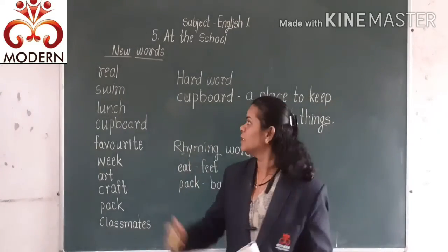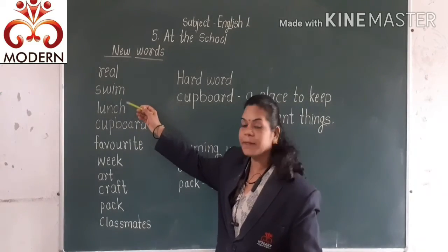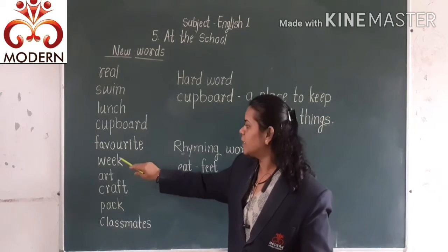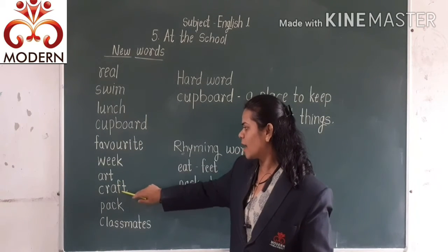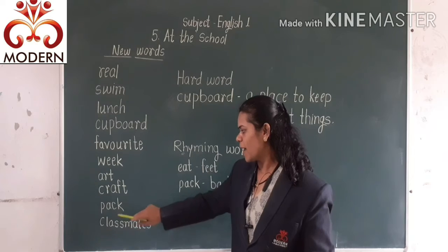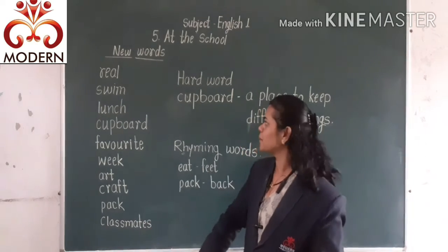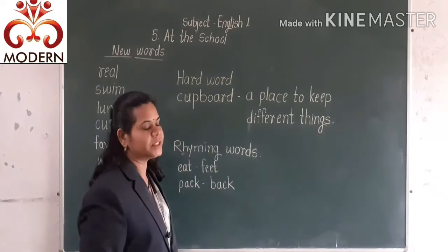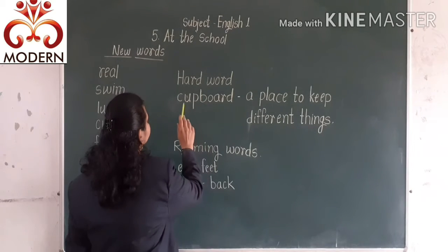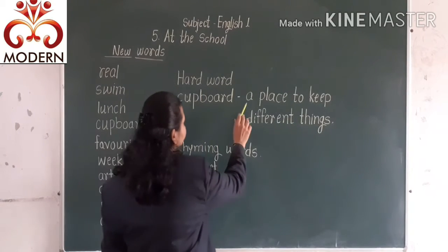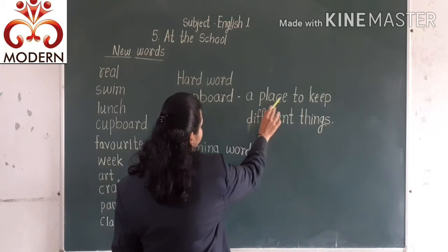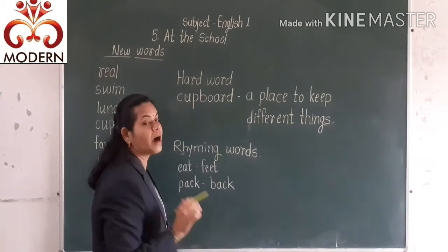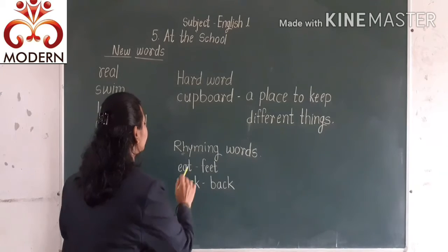These are new words from the lesson: reel, swing, lunch, cupboard, ferret, wing, art, club, tag, classmates. And the hard word is 'cupboard.' Cupboard means a place to keep different things.